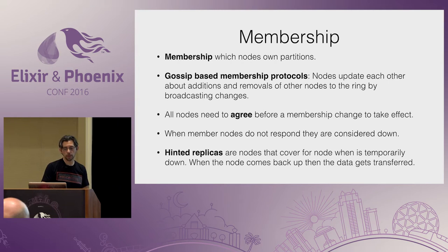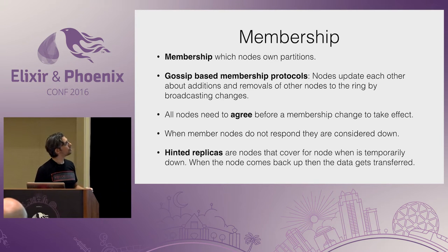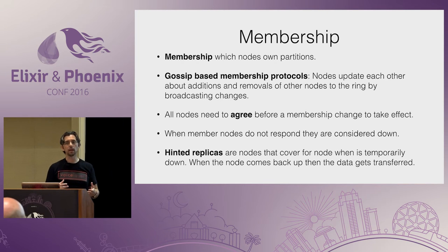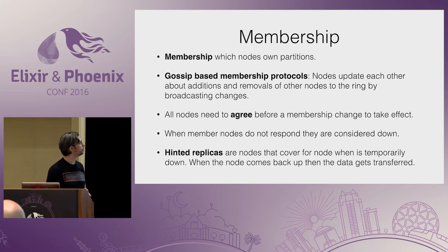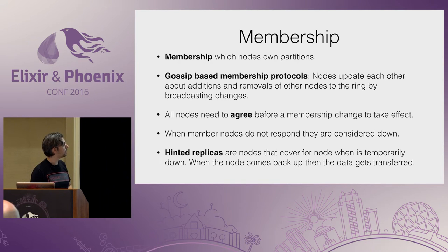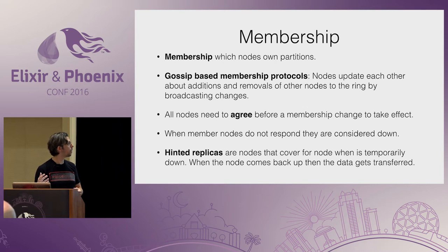Last, we have membership. Membership allows you to explicitly add nodes to your ring — the nodes in the ring are the ones assigned partitions, and each node has the same view of membership. This is not very dynamic because all nodes need to agree on who the members are before doing any other operation. If a peer node doesn't respond to a heartbeat, it's considered down — different from being removed from the ring. The concept of hinted replicas means that if a node is temporarily down, other nodes on your preference list can cover for it, and once it comes back up, anything collected by the hinted replica is handed off to the original node.